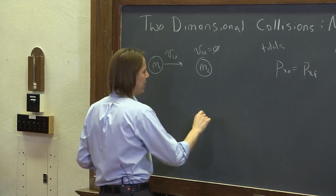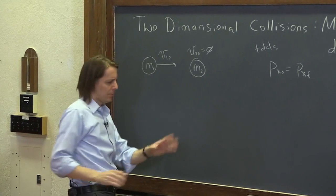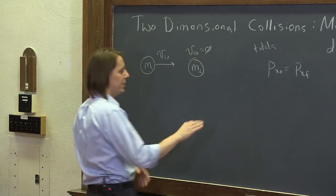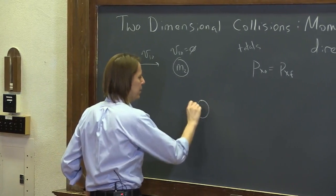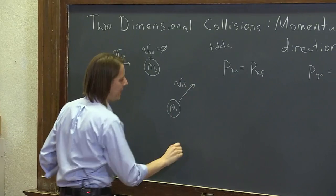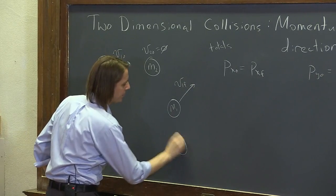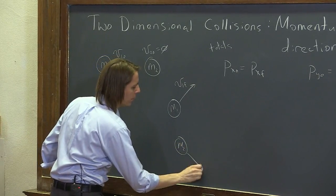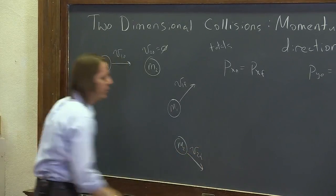And then after they collided, they went off. And I think I had it where mass 1 came up. Mass 1 went off like that, v1f. And mass 2 went off like that, v2f.